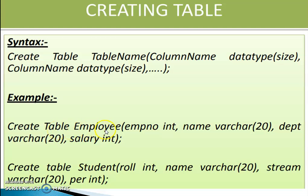Example: CREATE TABLE emp — emp_number is the first field name, data type is INT. Then name, the second field, data type is VARCHAR(20). Then dept, the third column, data type is VARCHAR(20). Then salary, the fourth column, data type is INT. Closing parenthesis, then semicolon.